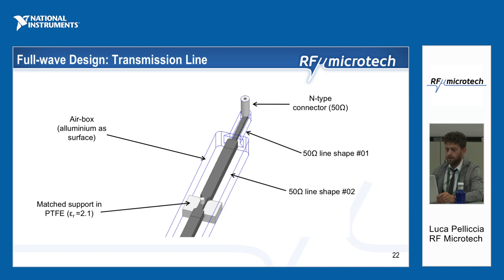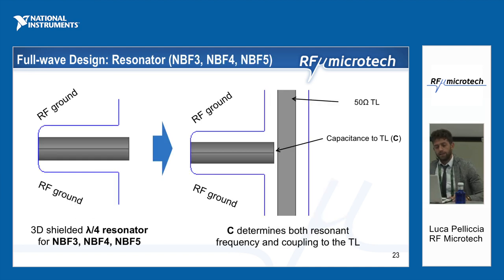Then we have an enlargement of the line, which is necessary because this section will be coupled to the resonators of the filter that are larger. The impedance of this line is still 50 ohms but the shape is different. Then we have other sections with 50-ohm impedance where we included matched supports to allow the presence of the internal metal line of the transmission line.